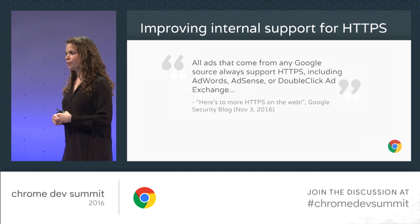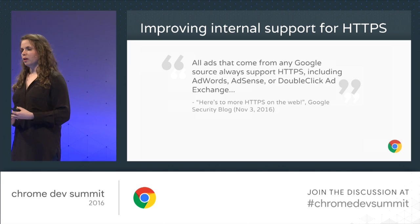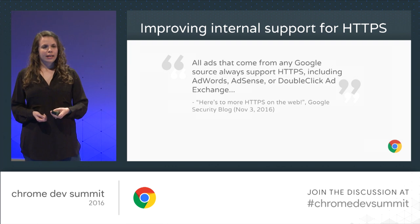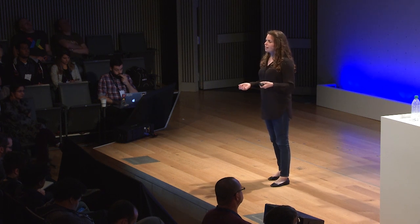Looking internally at Chrome and at Google, one of the ways that HTTPS sometimes worries developers is ad revenue. When you move your site to HTTPS, you have to move all of your content, all of your third-party resources including ads, in order for your site to work properly. Developers are often worried about losing ad revenue from ads that are only available over HTTP. To help alleviate this concern, all Google-sourced ads are already served over HTTPS. The Washington Post moved to HTTPS recently and saw no hidden revenue impact from their Google-sourced ads.